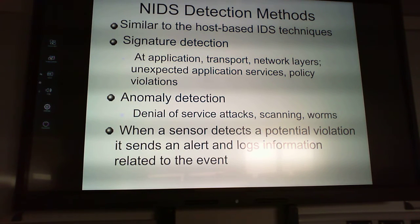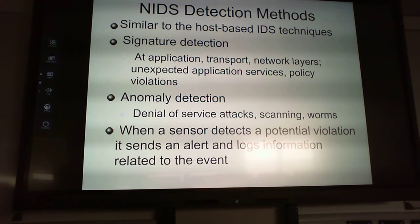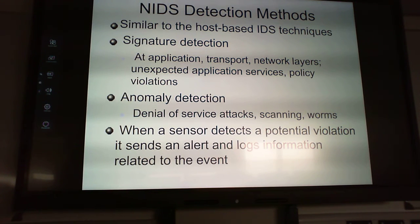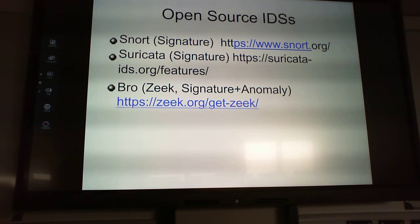For detecting threats in networks, signature detection can identify unexpected application services and policy variations. Anomaly detection covers DoS attacks, scanning, and worms — all flagged as unusual network behavior. When a sensor detects a potential violation, it sends an alert and logs information about the event. The IDS is detecting and logging, not actively preventing — it's just collecting information.